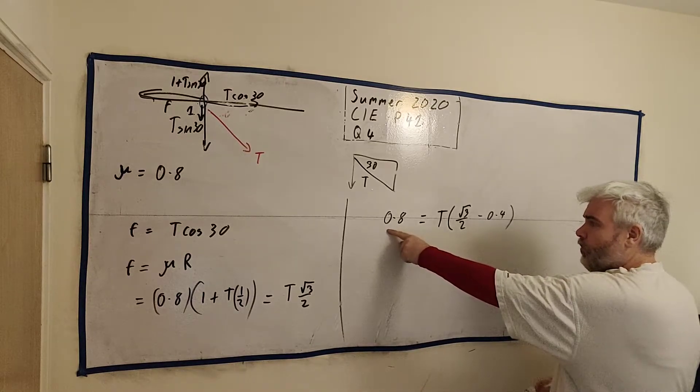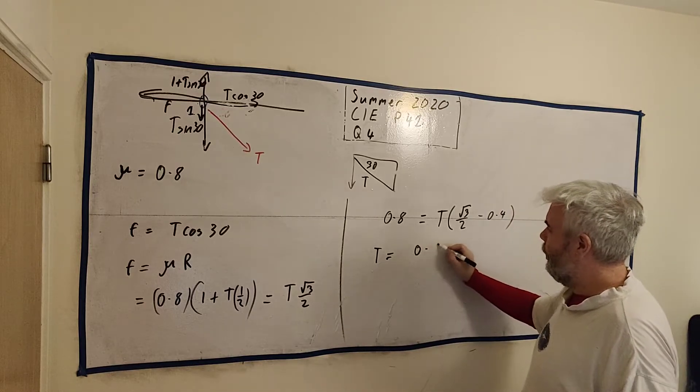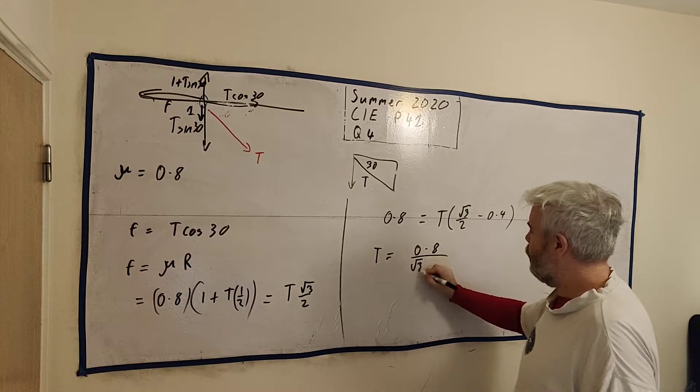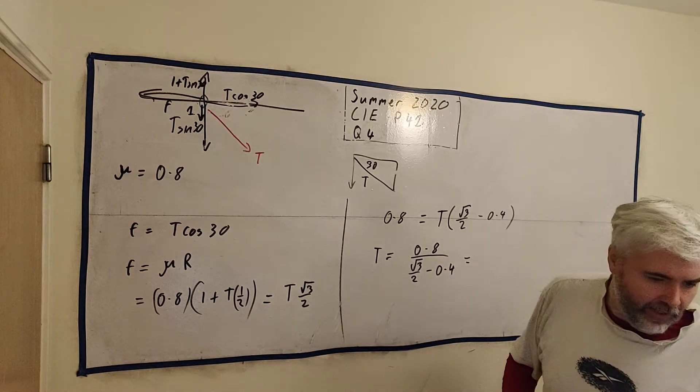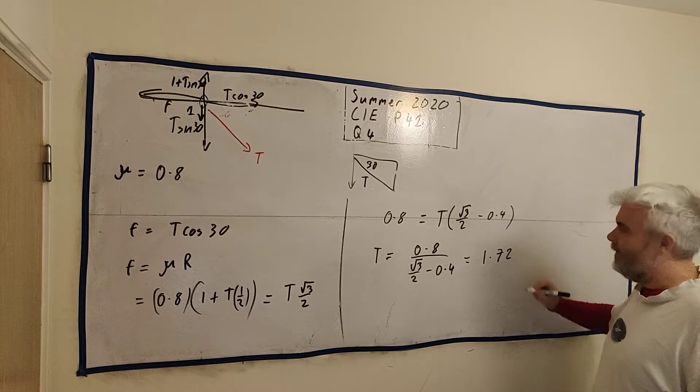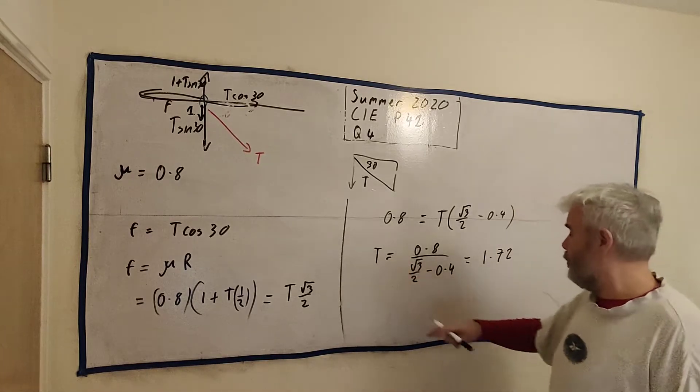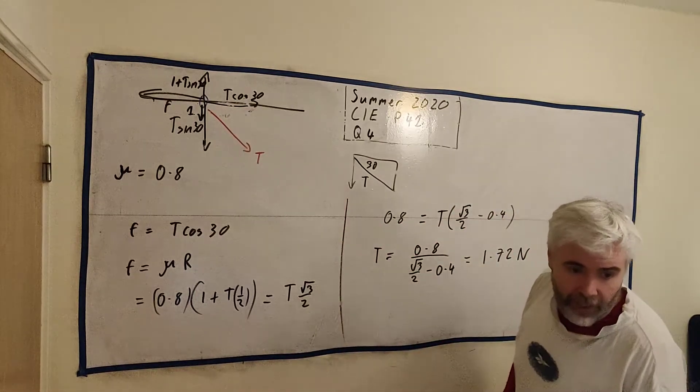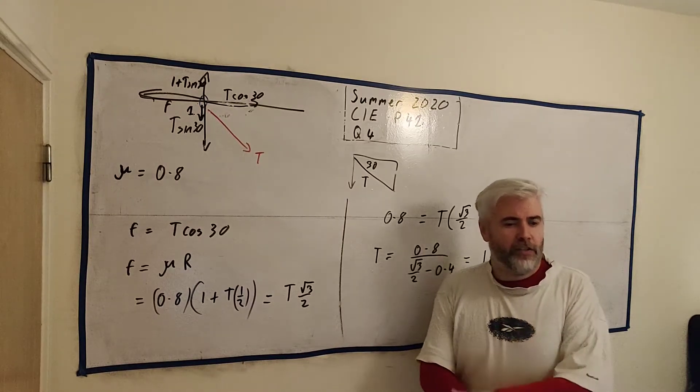And left on the other side would be just 0.8. Let's just divide this bracket across here. Let's switch them around. 0.8 divided by this bracket: square root of 3 over 2 minus 0.4. And we put that into a calculator. I've already done that out. And three significant figures will give 1.72. Now what are we working out here? We're working out force, which is newtons.